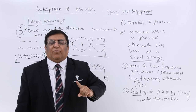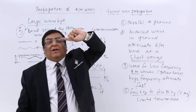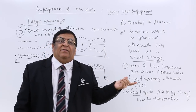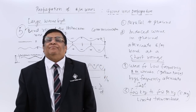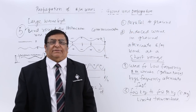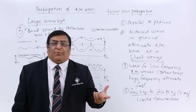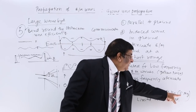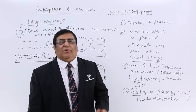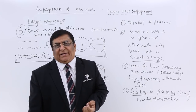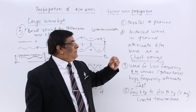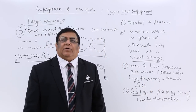Ground wave propagation has very restricted use. We want our radio station to carry a signal to 500 kilometers, but it cannot go by ground wave propagation. We want to send a radio signal with larger frequency — ground wave propagation is not fit for this. So we have to take help of another type of propagation for waves with larger frequency. That propagation is known as sky wave propagation, and in the next lecture, we will study how the disadvantages of ground wave are removed in sky wave propagation and what its advantages are.